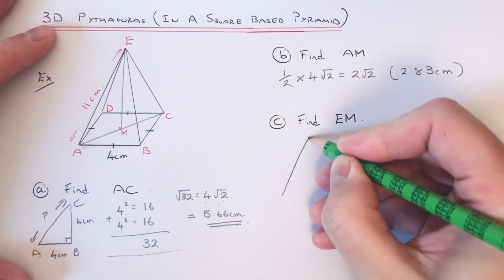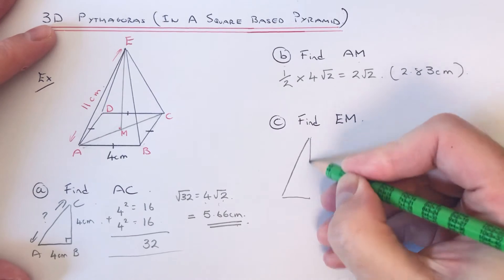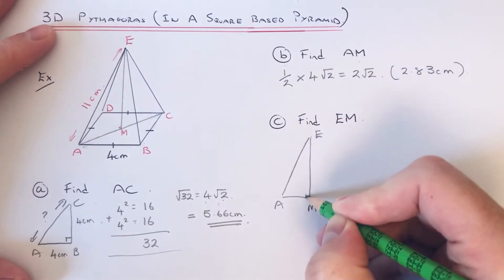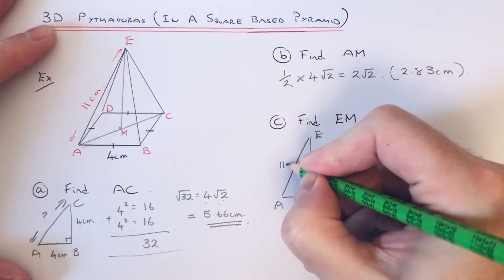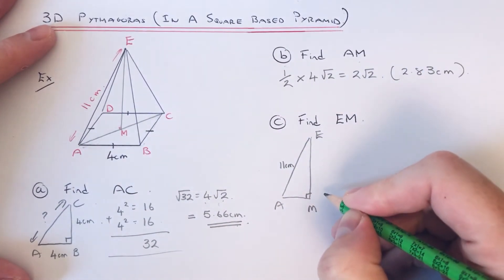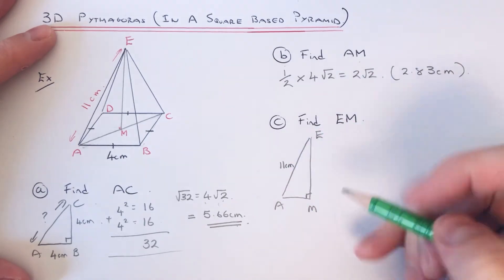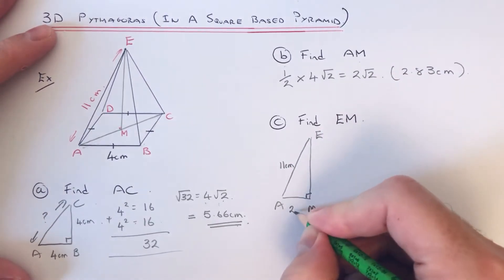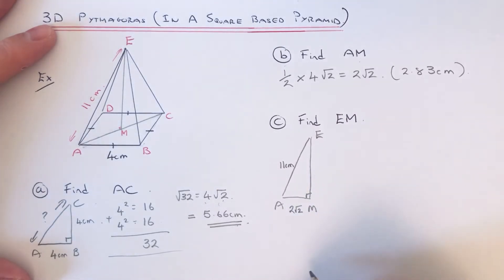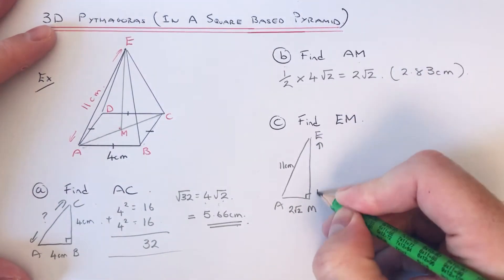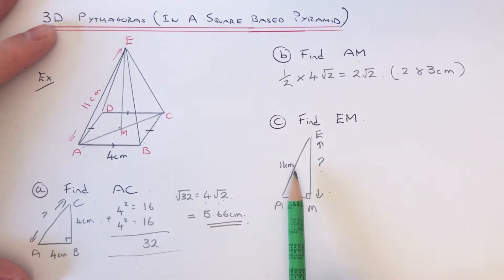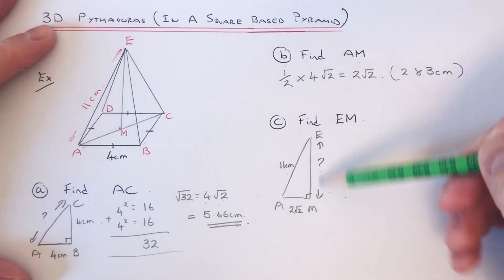So we've got AE, which is 11, and we've got AM, which we worked out in the last one. So it's best to use the surd, so 2√2. And we're working out the height of the pyramid, EM.